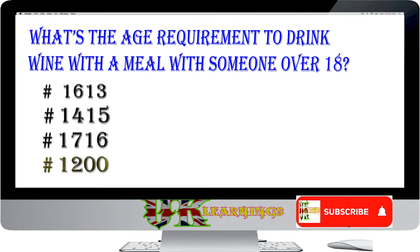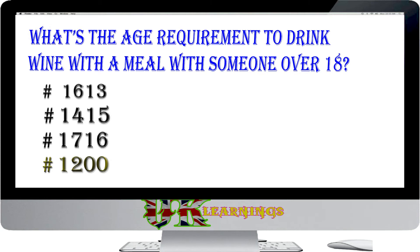When did the Battle of Agincourt take place? The answer is 1415. One of the most famous battles of the Hundred Years' War was the Battle of Agincourt in 1415, where King Henry V's vastly outnumbered English army defeated the French.